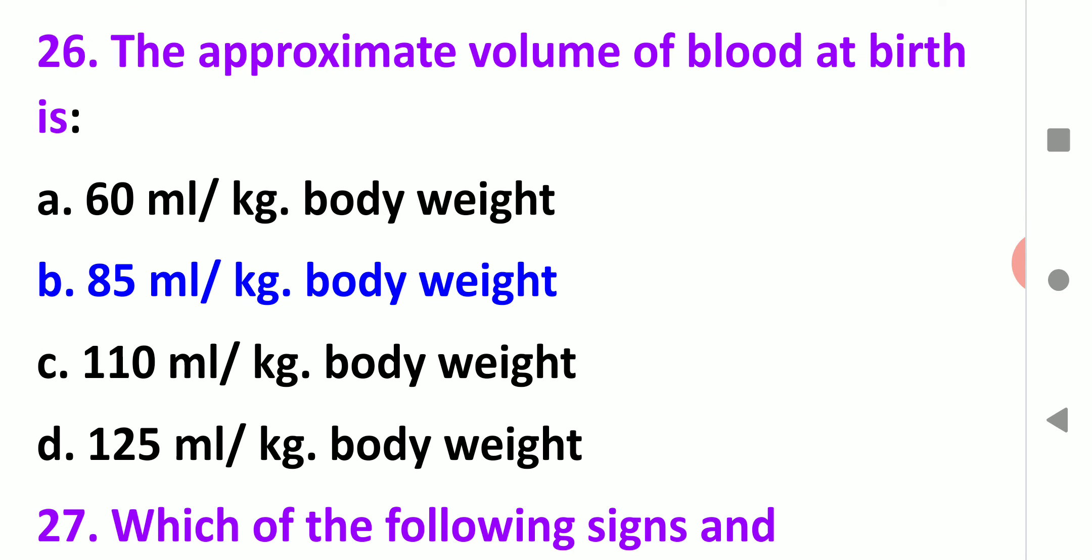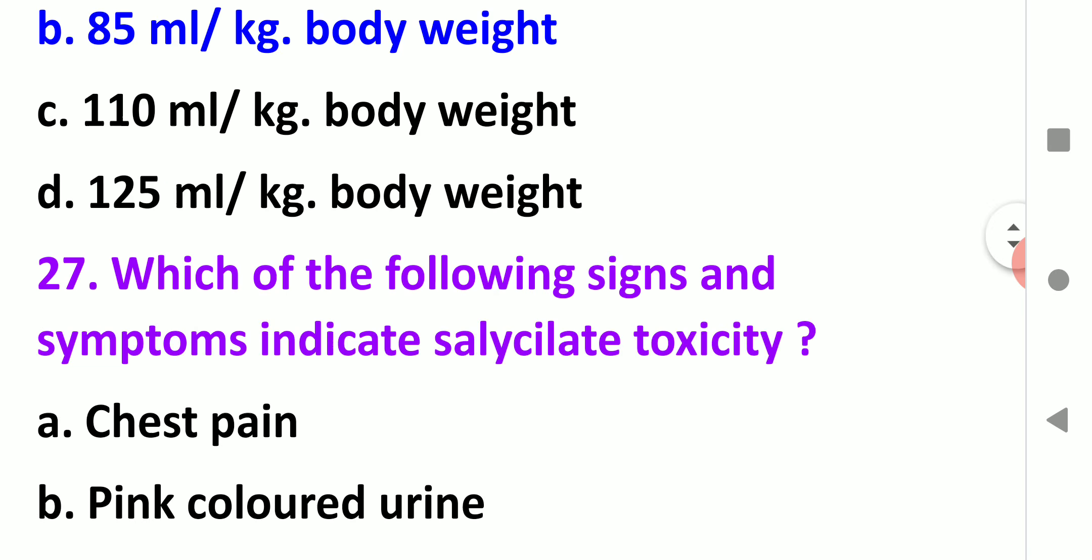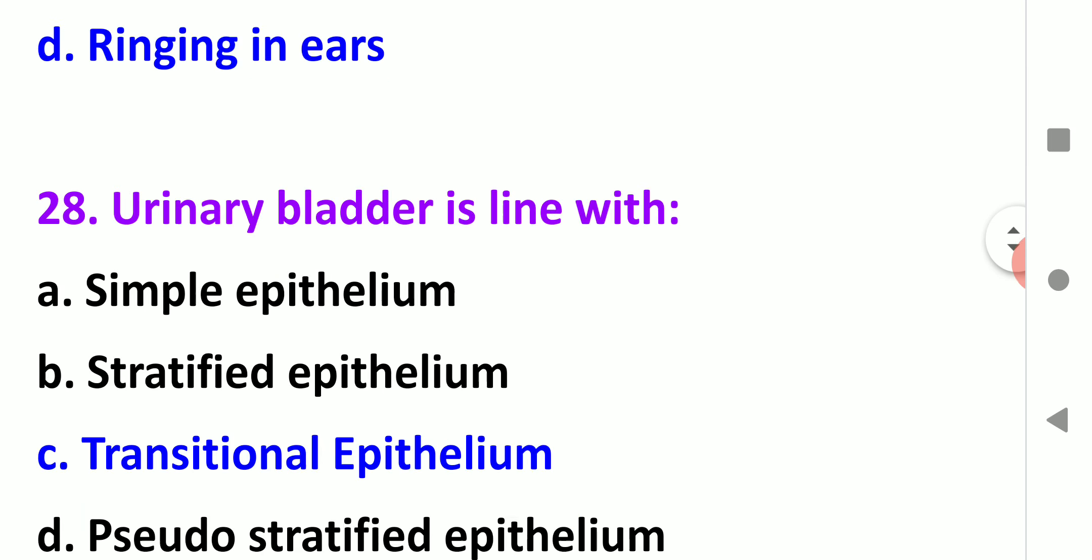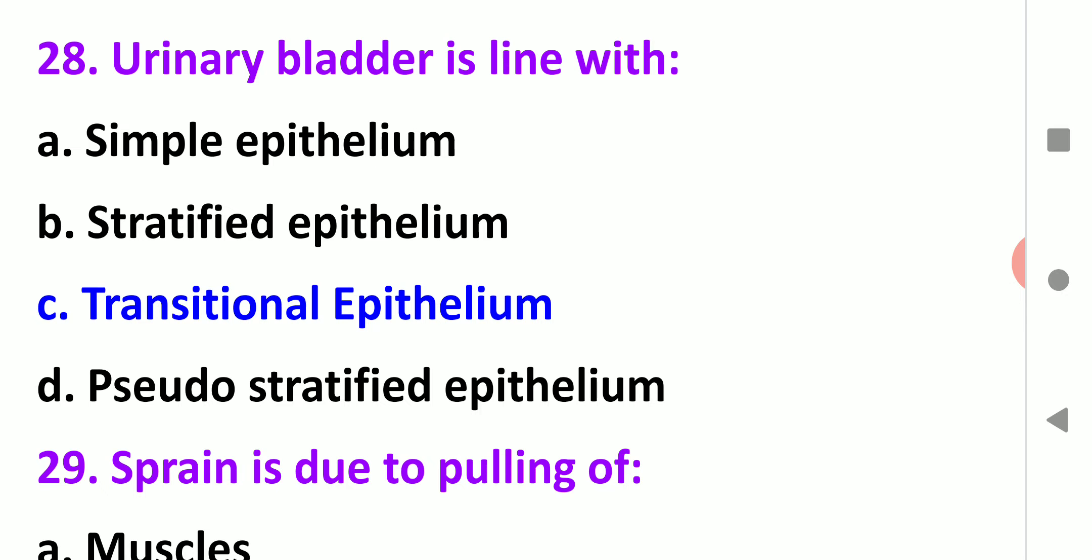The approximate volume of blood at birth is 85 ml per kg. A normal baby's weight is 3 kg, so it's 85 ml times 3 kg equals 255 ml. Next, which of the following signs and symptoms indicate salicylate toxicity? The most common side effect is ringing in the ears, also known as tinnitus.